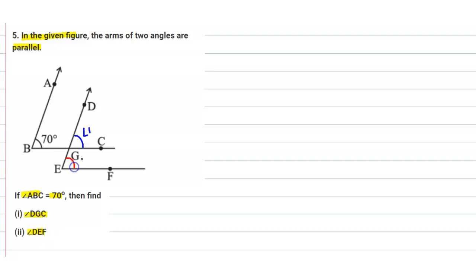We need to find angle DEF, so let this be your angle number two. We are given that the arms of two angles are parallel. Also, angle ABC is equal to 70 degrees, and we need to find angle DGC, which is equal to angle 1.